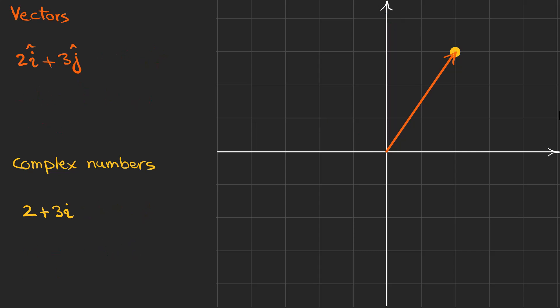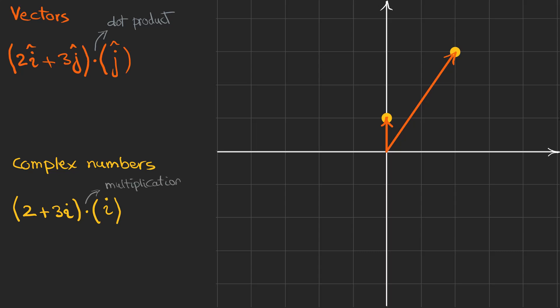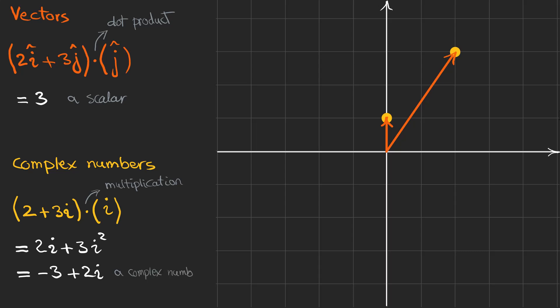Now consider multiplication. For the same vector and complex number, we write the multiplications: for vectors we have the dot product, and for complex numbers we have simple multiplication. The dot product gives 3, which is a scalar — no longer a vector — but the complex number multiplication gives minus 3 plus 2i, which is still a complex number. As you can see, the results are different, so vectors and complex numbers are different entities, though they sometimes act like each other as in the addition example.